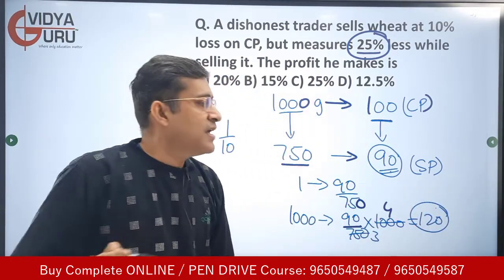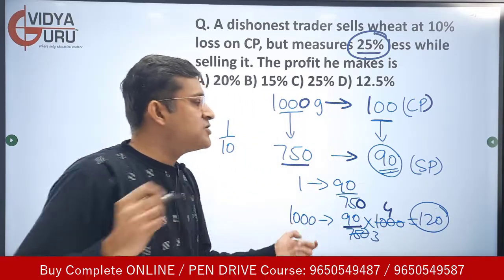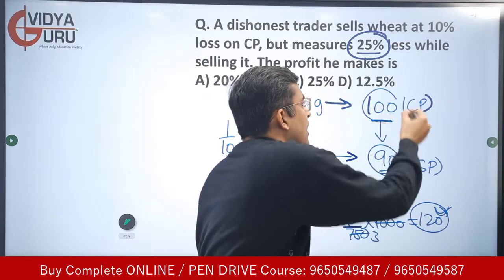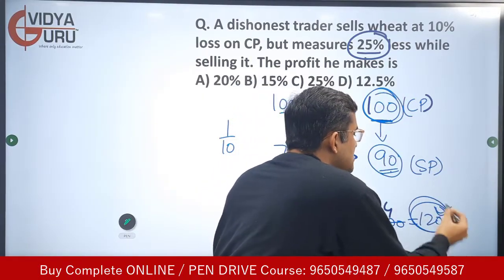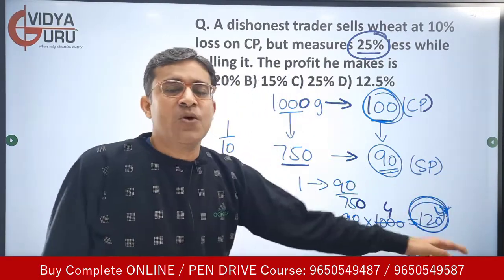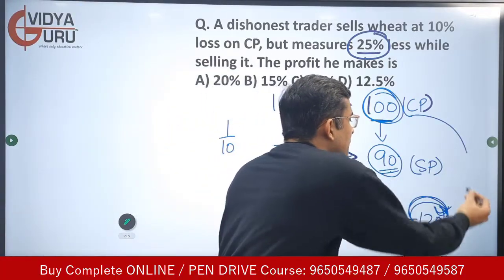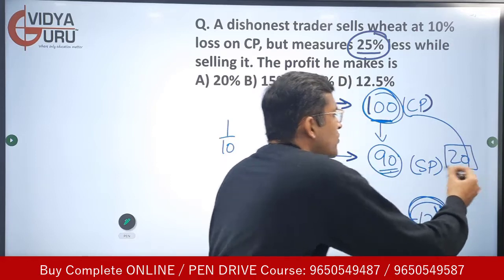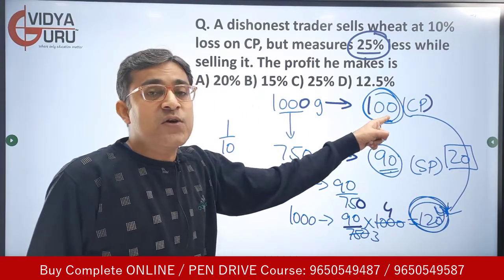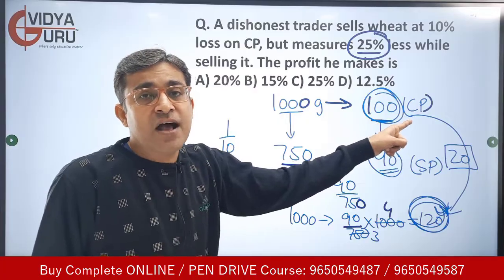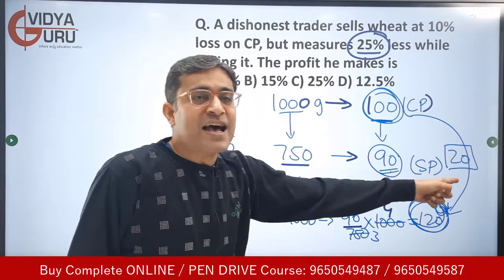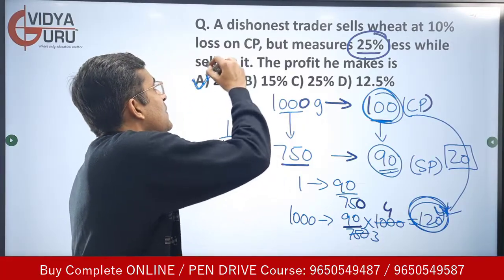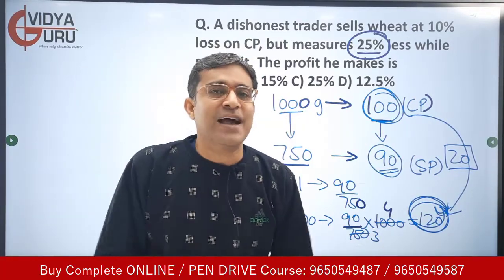The selling price of 1 kg is 120 rupees and the cost price of 1 kg was 100 rupees, so he is making a profit of 20 rupees. On a base cost price of 100, a profit of 20 rupees means a profit percentage of 20 percent — that's the answer.